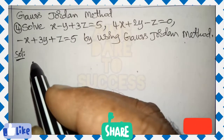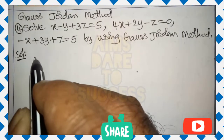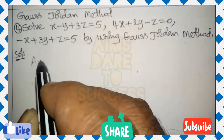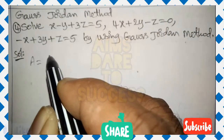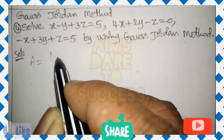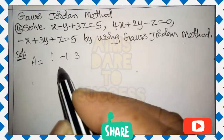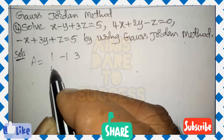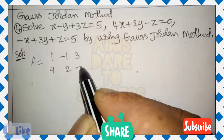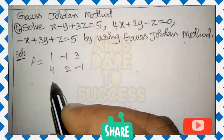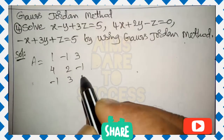Matrices Gauss-Jordan method — a very important previous question. Solve: x minus y plus 3z equals 5, 4x plus 2y minus z equals 0, minus x plus 3y plus z equals 5, by using the Gauss-Jordan method.